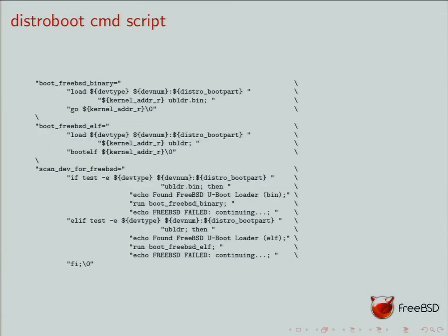This is what the Distroboot script looks like — it's shell-based language. If it finds ubldr.bin... we currently have two loaders on FreeBSD: the BIN version and the ELF version. The ELF version is compiled per board because it has a specific load address, while the BIN version is a position-independent executable that can be compiled once and run on every board. I don't think we need the ELF version of the U-boot loader anymore. I need to check every U-boot port and then we can deprecate the ELF version.